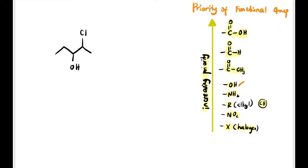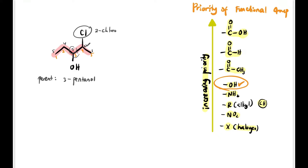When a structure has both OH and a halogen, we follow the priority of functional groups — OH is higher priority than halogen, so OH determines the parent chain. Numbering from one side gives 1-2-3-4-5, and from the other side also 1-2-3-4-5, confirming OH is at carbon 3: three-pentanol. The chloro substituent is at carbon 2 (preferred over carbon 4), giving the full name 2-chloro-3-pentanol. The OH carbon has two other carbons attached, so it is a secondary alcohol.